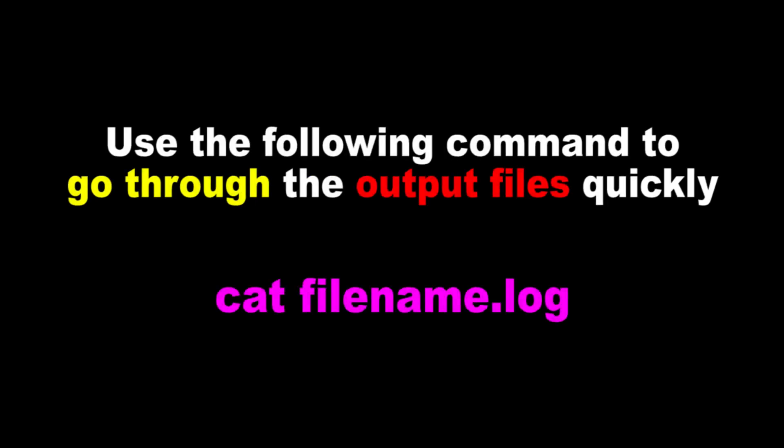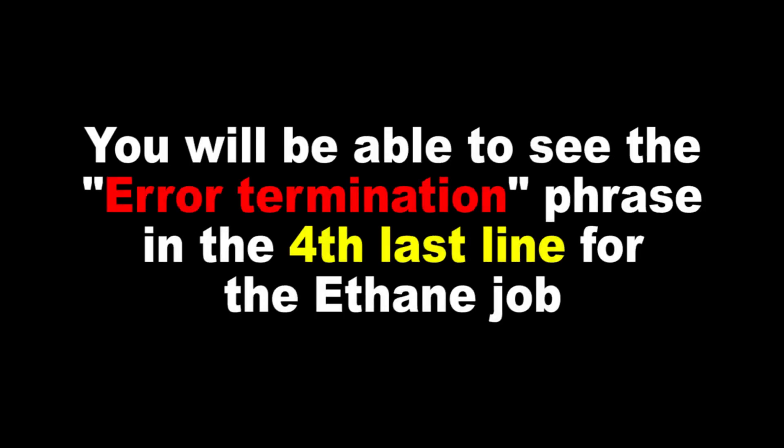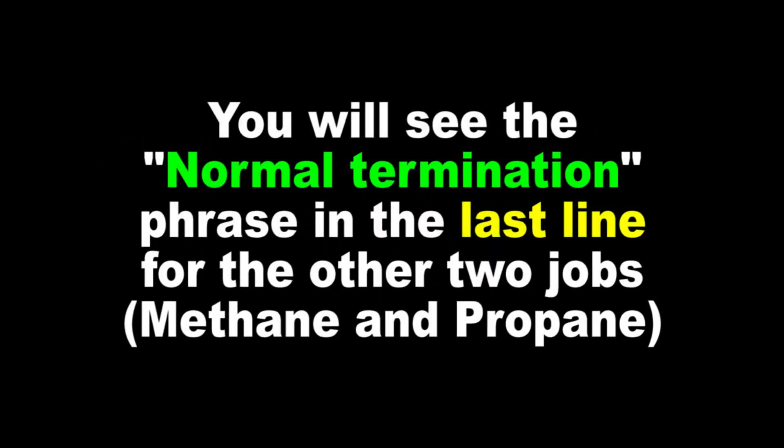Navigate inside any output folder and use the following command to go through the output files quickly. You will be able to see the error termination phrase in the fourth last line for the ethane job. You will see the normal termination phrase in the last line for the other two jobs.